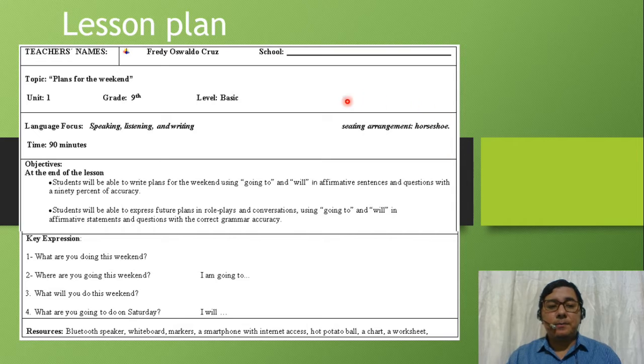Next we have the objectives. The first one: at the end of the lesson, the students will be able to write plans for the weekend using going to and will in affirmative and questions with 90% accuracy. The second objective: students will be able to express future plans in role plays and conversations using going to and will in affirmative statements and questions with the correct grammar accuracy.